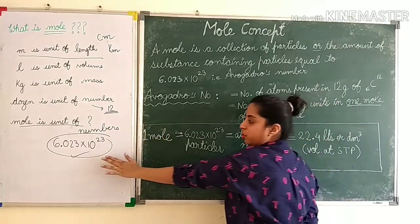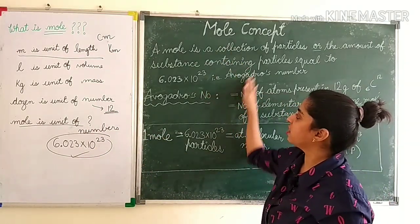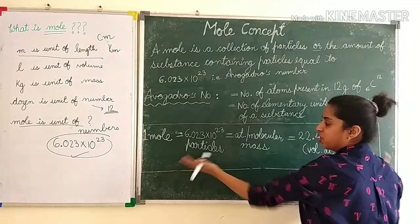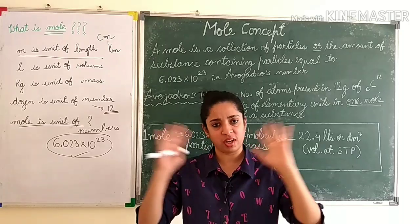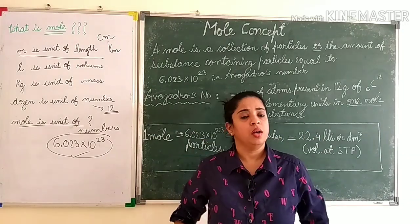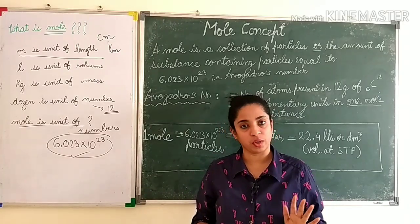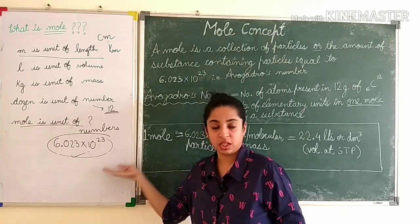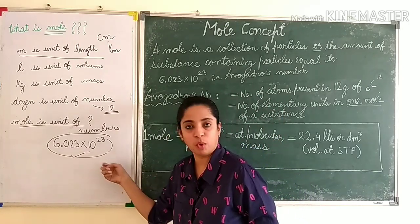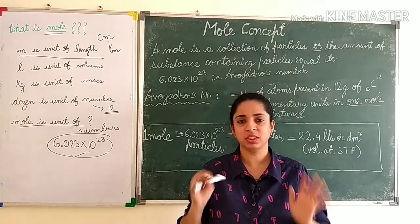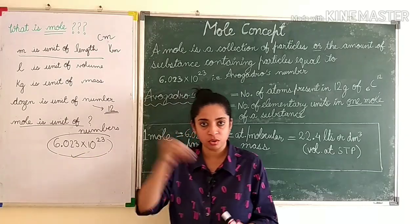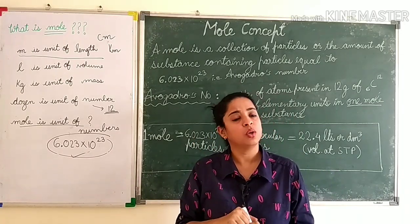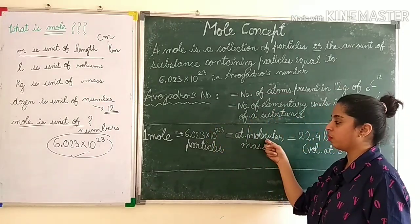To understand this definition better and to solve all sums within seconds, let me share a magic formula. Suppose you go to a shopkeeper and ask him to give you one mole of sodium atoms. One mole equals 6.023 × 10²³ atoms, so will he sit and count that many atoms for you? No — instead, he will weigh it using the atomic mass of the substance.